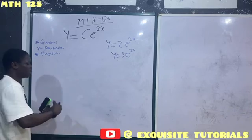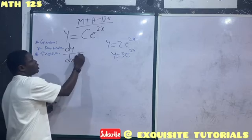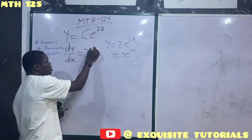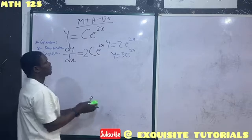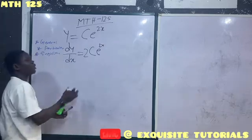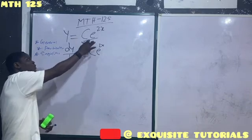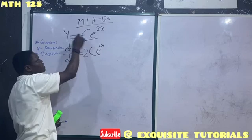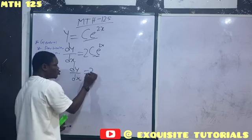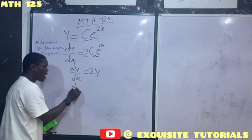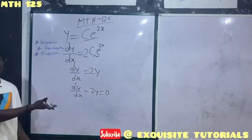Let's quickly obtain this. If I differentiate once, I will have dy/dx equals 2c exponential 2x. When you differentiate an exponential, you get the same thing — exponential 2x. Now I want to eliminate c. I know that c exponential 2x is y, so anywhere I see c exponential 2x I replace it with y. So dy/dx equals 2y, giving dy/dx minus 2y equals 0. This is the differential equation from this solution.